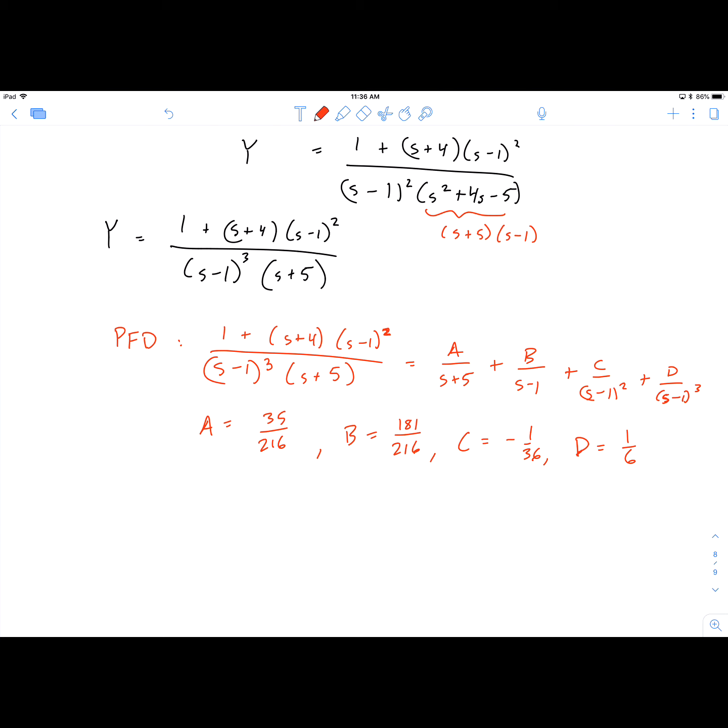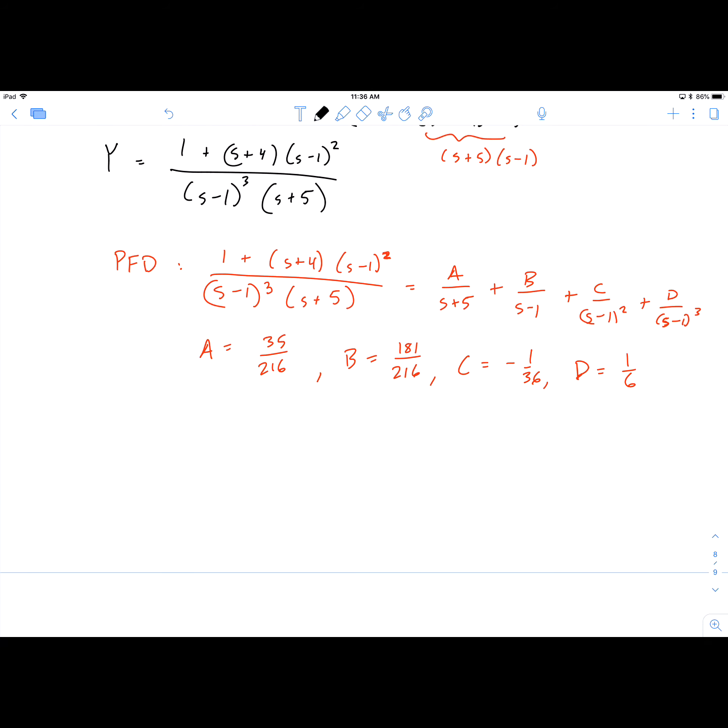So what this works down to is that Y is 35/216, or 216 rather, times 1/(s+5), plus 181/216 times 1/(s-1),